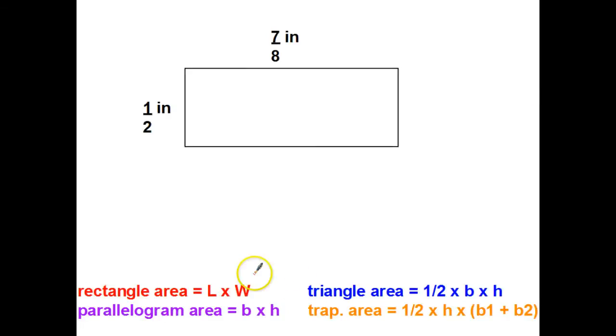This video will help you find the area and perimeter of rectangles, triangles, parallelograms, and trapezoids when the sides are fractions. At the bottom I have all the area formulas for reference. Perimeters always just means adding all the sides going around. Let's start with the first one — a rectangle — and find the perimeter. The first thing is to get all sides labeled.